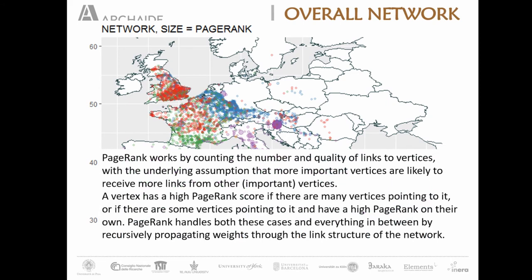PageRank simply counts the number and quality of links of each vertex. It is at the base of the Google algorithm, which computes links between web pages. The assumption is that more important vertices are likely to receive more links from other important vertices — so a vertex has a high PageRank score if many important vertices point to it; otherwise the score is lower. In this way we are trying to detect the most important vertices in each community.